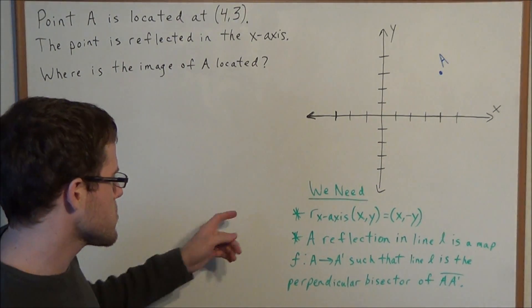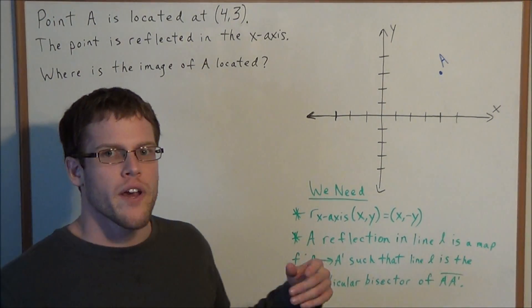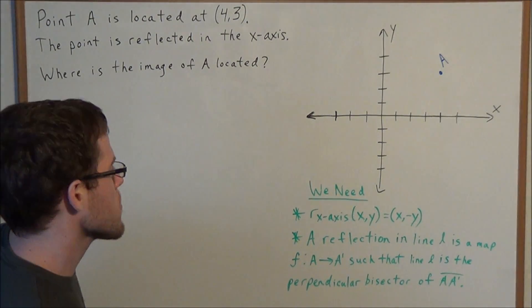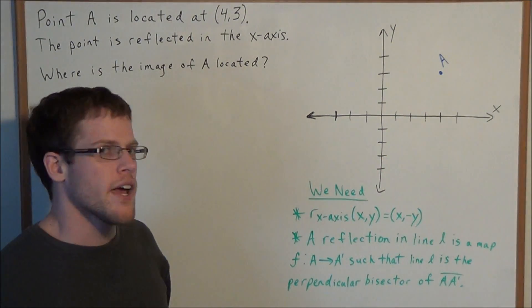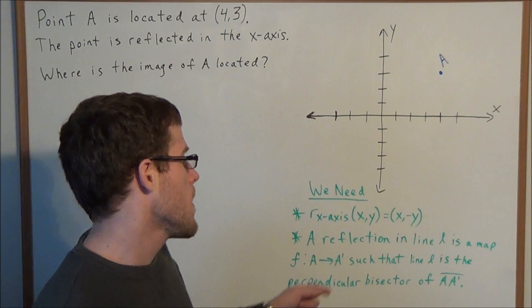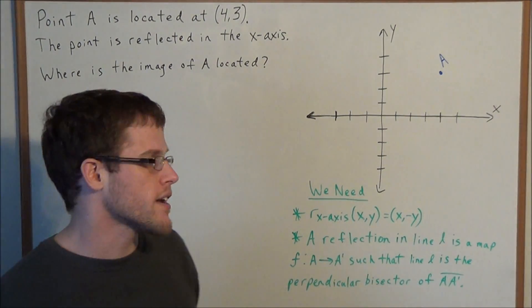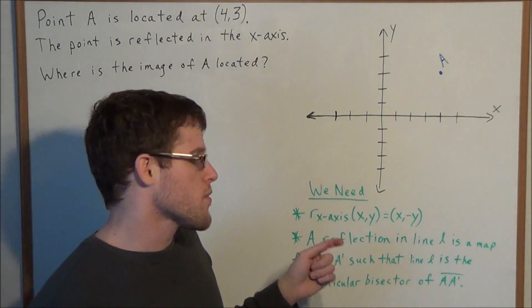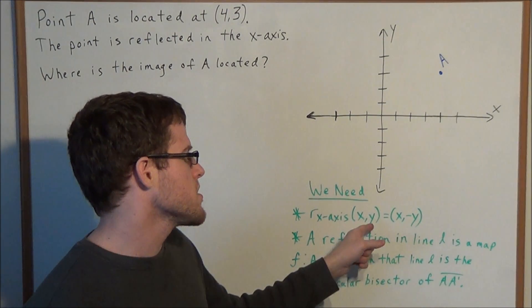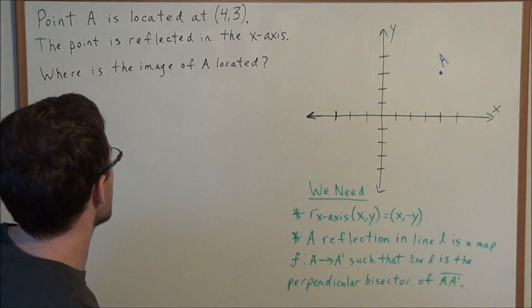The first way I want to look at is to use the equation for a reflection in the x-axis. When we have some point (x,y), a reflection in the x-axis of (x,y) equals (x,-y), which tells us to reflect a point in the x-axis, all we need to do is negate the y-coordinate.